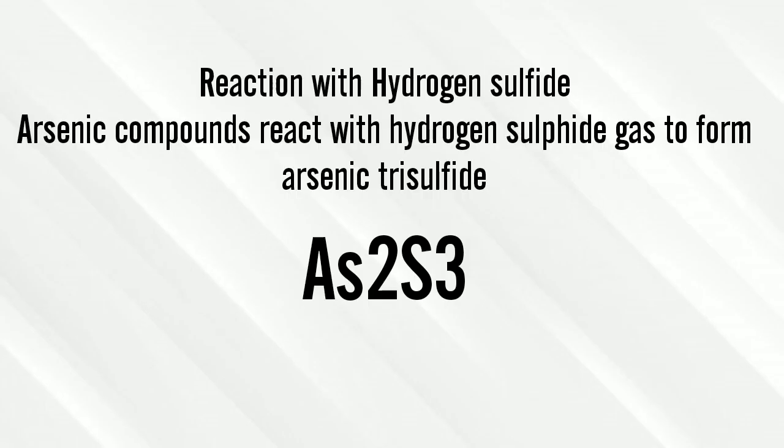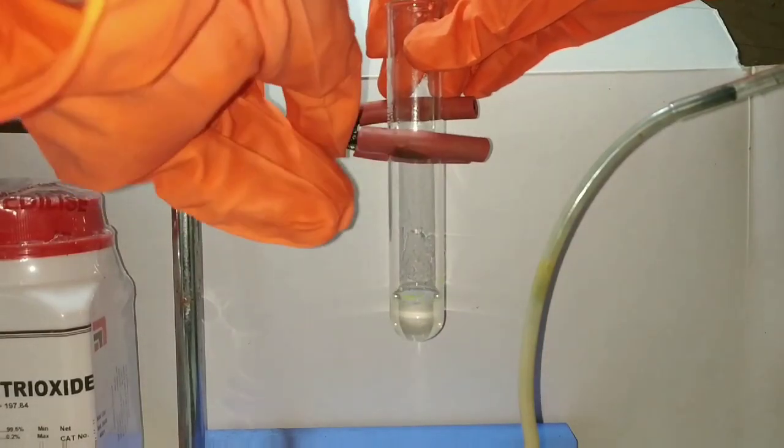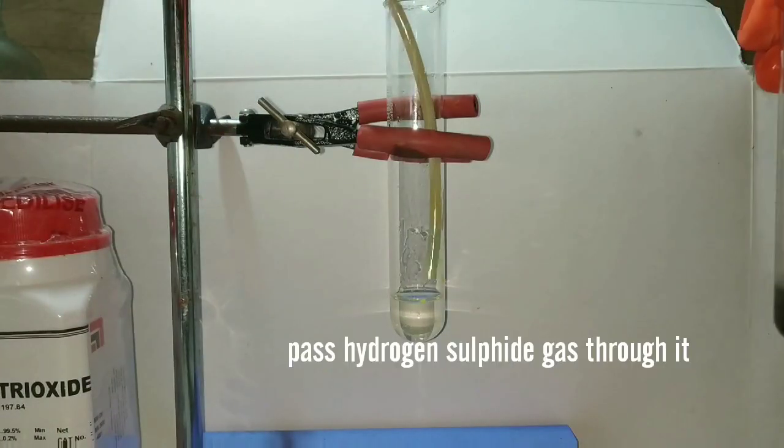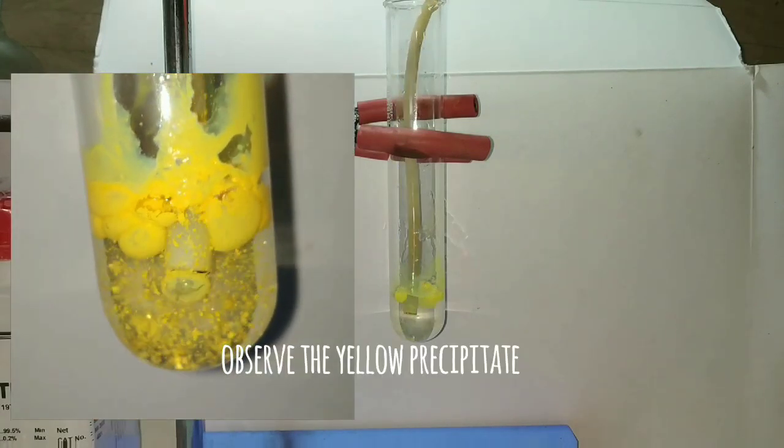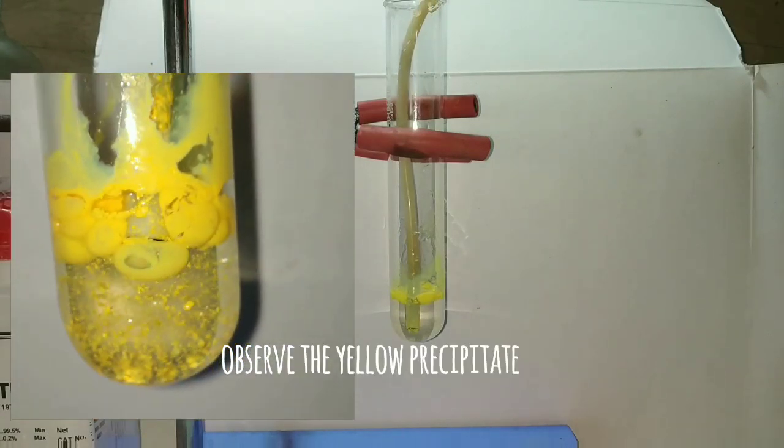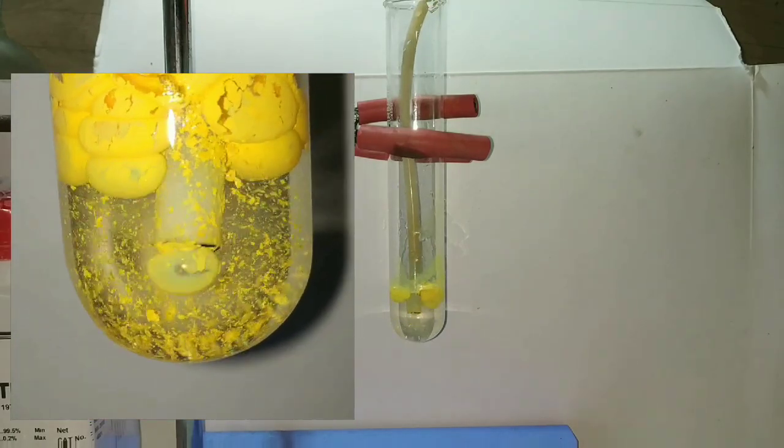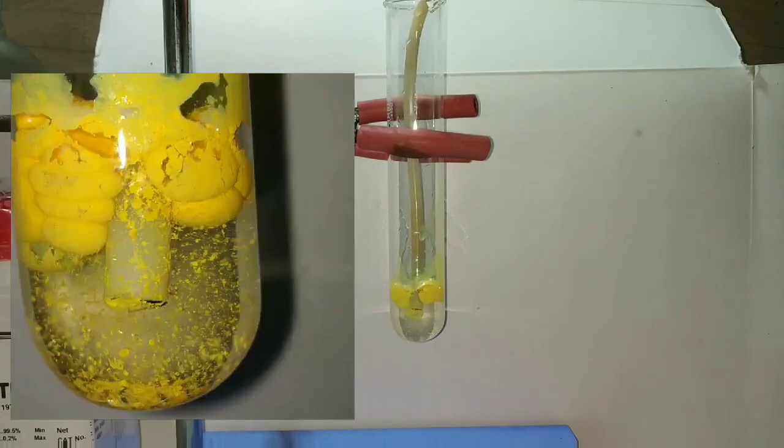Now we see the reaction of hydrogen sulfide with arsenic compounds forming arsenic trisulfide, a beautiful yellow precipitate. Here we are taking the arsenic trichloride prepared earlier. Now we will be passing hydrogen sulfide gas through it. You can see that on passing the gas there is formation of a beautiful yellow precipitate and this precipitate is arsenic trisulfide. And this is used as a test for analysis of arsenic ions in the laboratory.